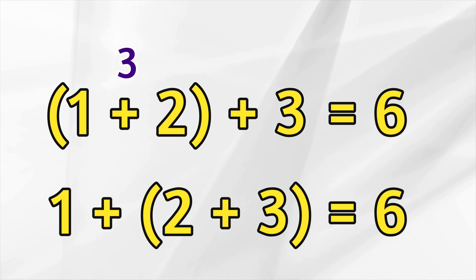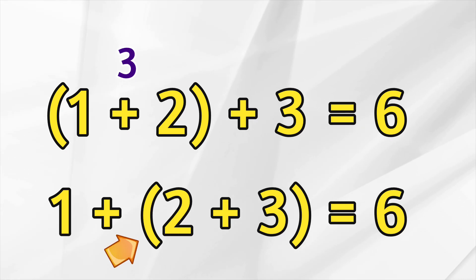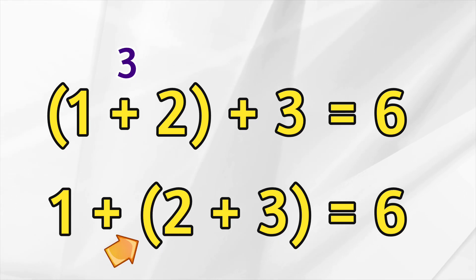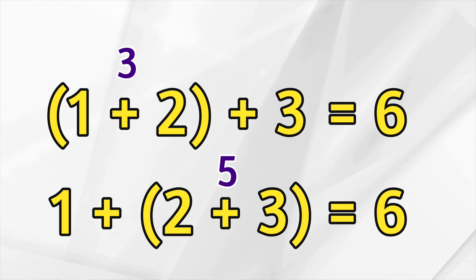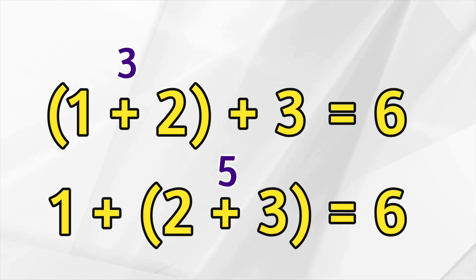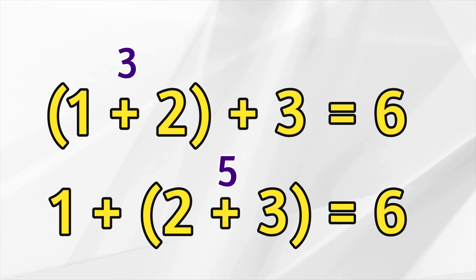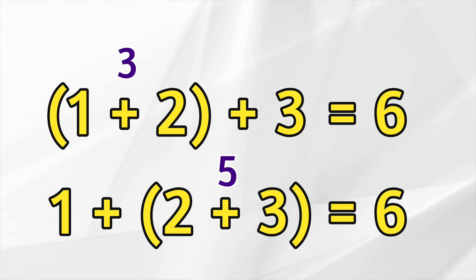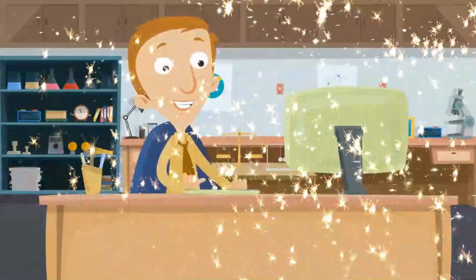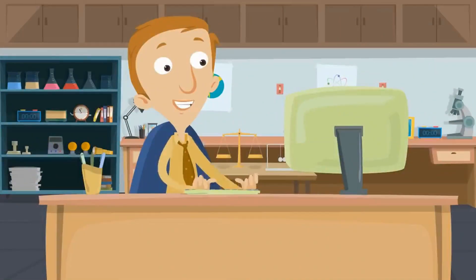Then 2 plus 3 equals 5, and 1 plus 5 equals 6. That's awesome. It doesn't matter how the numbers are grouped when you add — the answer stays the same.